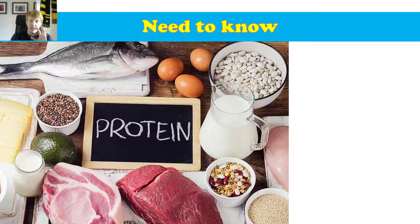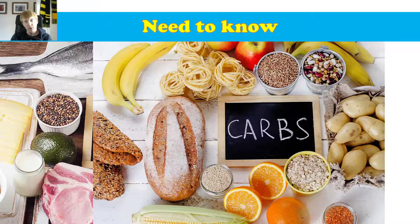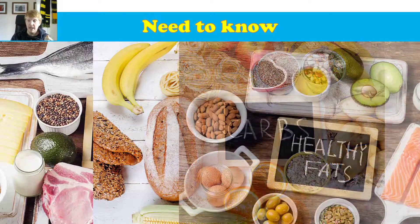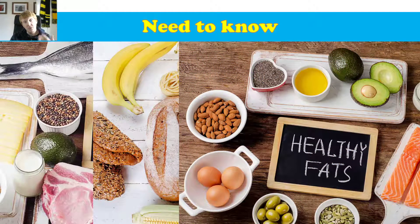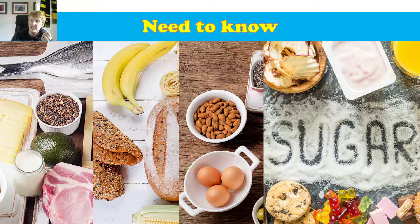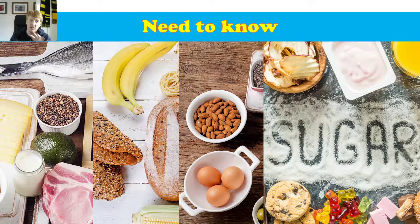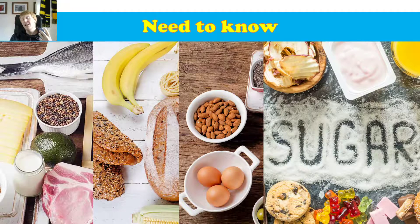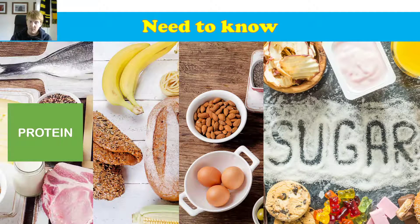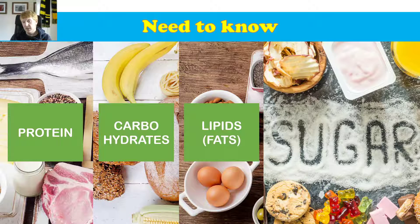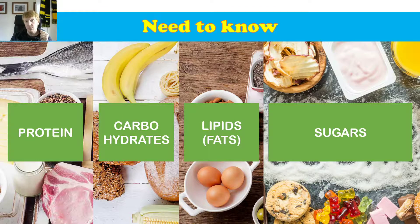These are things you need to know going into the food test RPA. We need to know that some of the components in food include protein, carbohydrates, lipids or fats, and sugar. These are the four things we need to understand are inside food, and we can test for them — proteins, carbohydrates, lipids, and sugars.